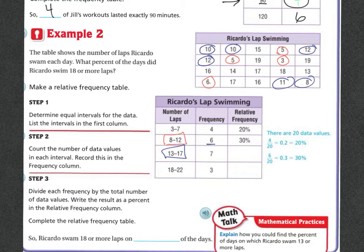Now if we're looking at 13 through 17 laps, they went through and they did that one as well. So you kind of get the idea. So now that we have that, step 3 is to divide each frequency by the total number of data values and then write that as a percent in the relative frequency column. That's a mouthful. But basically what you're going to do...